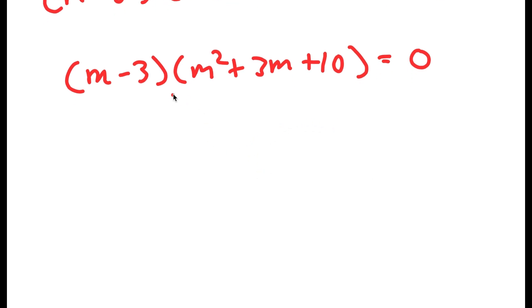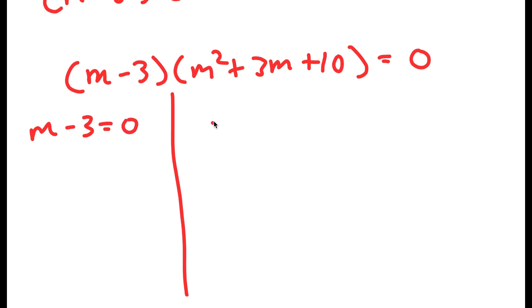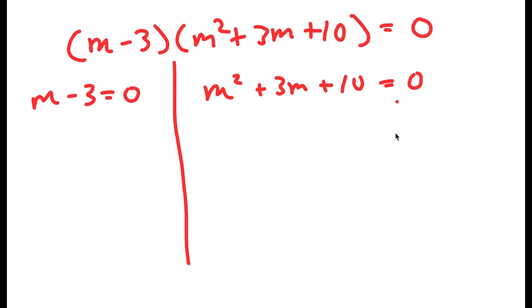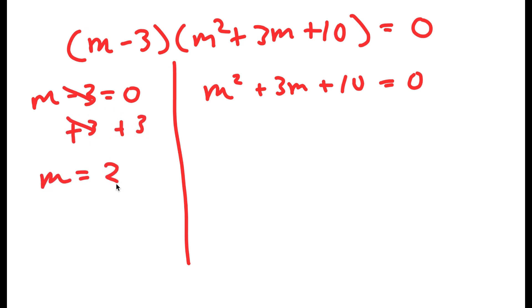So now this gives me two equations: I have m minus 3 is equal to 0, and m squared plus 3m plus 10 is equal to 0. For m minus 3 equals 0, I can add 3 on both sides and I get m is equal to 3.